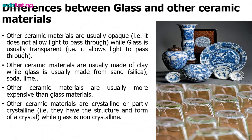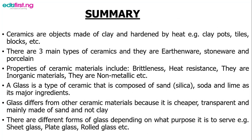What makes glass unique compared to other ceramic materials? First, other ceramic materials are usually opaque — they do not allow light to pass through — while glass is transparent. Second, other ceramics are usually made from clay while glass is made from silica sand, soda, and lime. Third, other ceramic materials are usually more expensive than glass. Finally, other ceramic materials are crystalline or partly crystalline, meaning they have a structure like that of a crystal, while glass is non-crystalline.